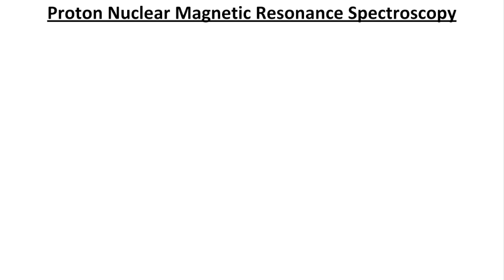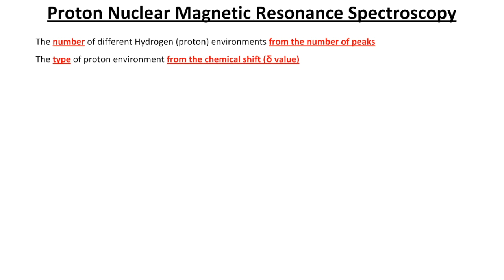So we'll run through some essentials now of proton NMR. It tells us the number of different hydrogen or proton environments, and that's from the number of peaks. We can tell the type of proton environment from the chemical shift value, that information from the datasheet. We can tell the relative numbers of each type of proton, and that's from the peak area or the integration value.